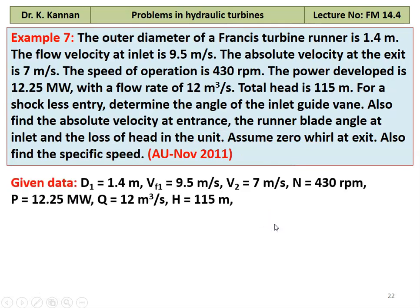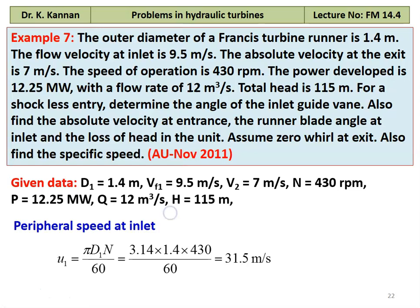Given data: inner diameter D1 is 1.4 meter, Vf1 flow velocity is 9.5 meters per second, V2 absolute velocity is 7 meters per second, speed N is 430 RPM, power is 12.25 megawatts, discharge is 12 meter cube per second, and the available head is 115 meter. The peripheral speed at the inlet: U1 equal to pi D1 N divided by 60, which is 3.14 into 1.4 into 430 divided by 60 equal to 31.5 meters per second.